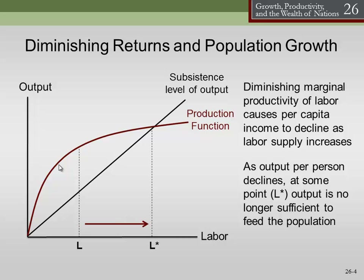As output per person declines, at some point we hit this point where output is no longer sufficient to feed the population. If we have more and more people, at some point we get to the point where we cannot produce enough stuff to feed all the people because of this idea of diminishing marginal product of labor.